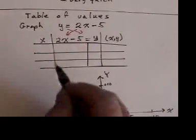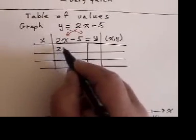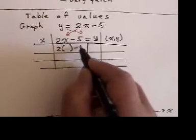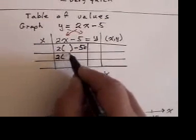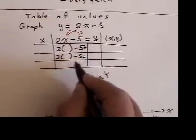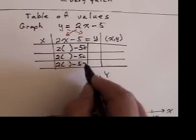Now, I then write out the equation three times. But wherever I see the letter x, I put a bracket. 2 bracket minus 5 equals. 2 bracket minus 5 equals.